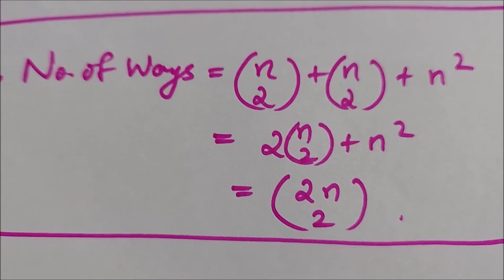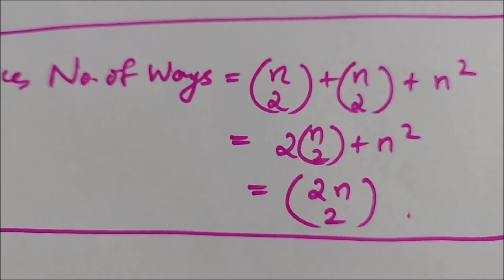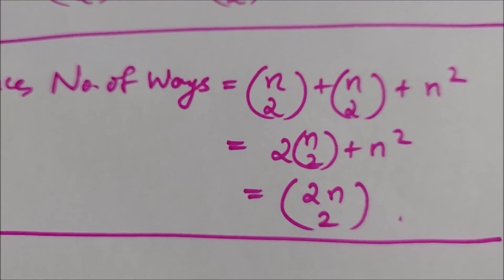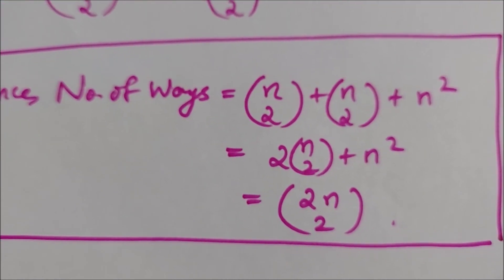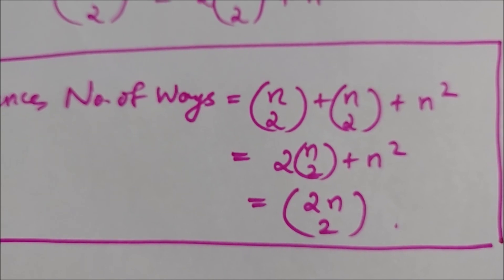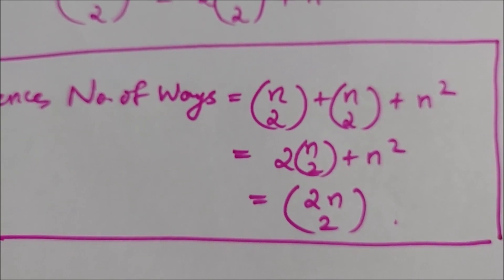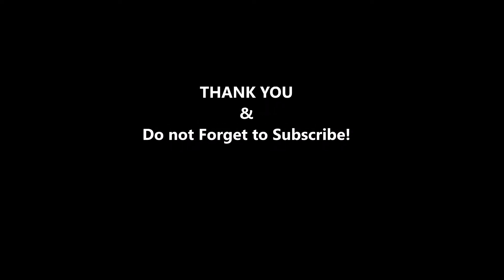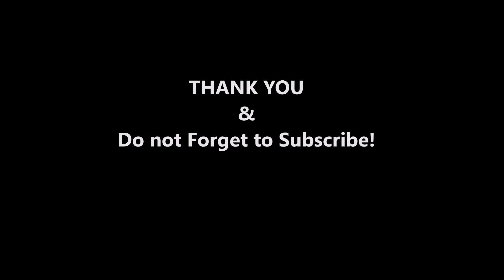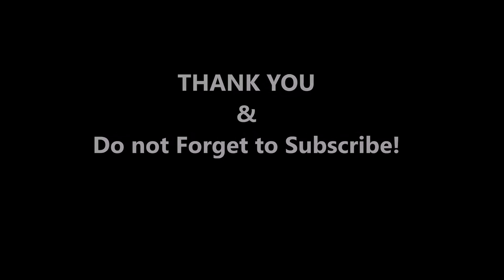Since these are disjoint cases we add them, giving C(n, 2) plus C(n, 2) plus n², which equals 2·C(n, 2) plus n². That is the same as C(2n, 2), and hence proved combinatorially. We have seen two ways of counting the same thing, proving that C(2n, 2) equals 2·C(n, 2) plus n². Thank you and hope to see you in the next video.